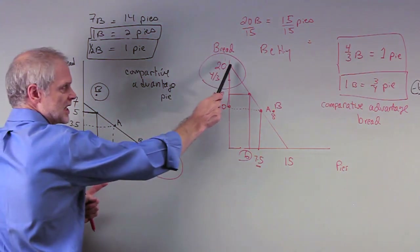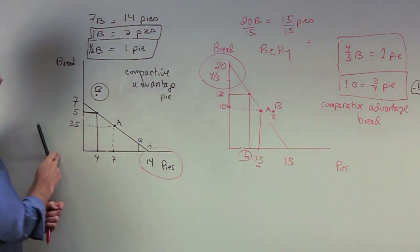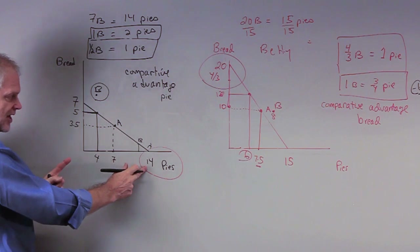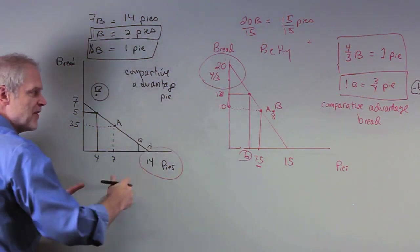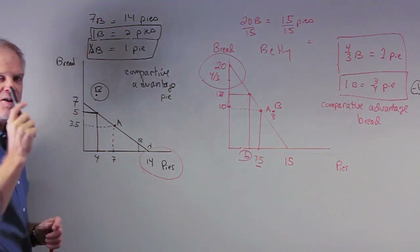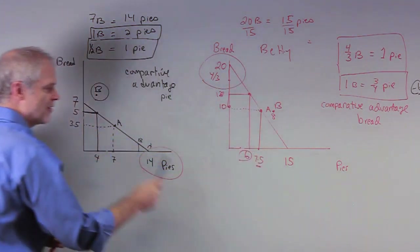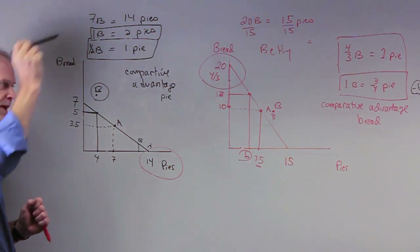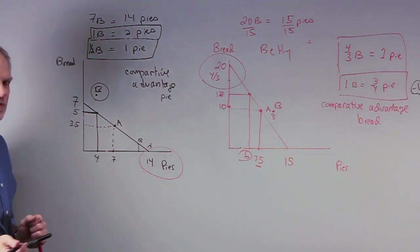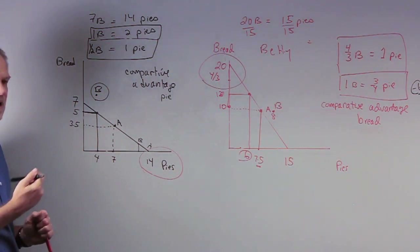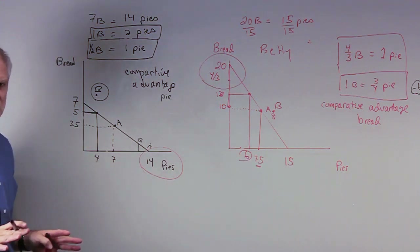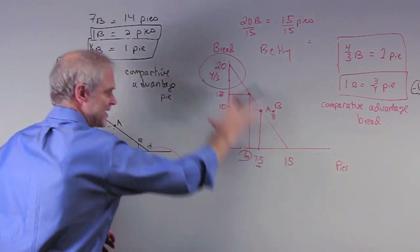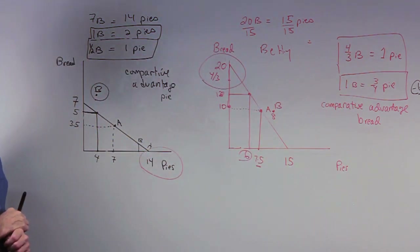Underline this: Betty is more productive in both bread and pies than Barney. And yet, because of comparative advantage — because Barney specialized where he had a lower opportunity cost, and she specialized where she had a lower opportunity cost — and then they trade, they both get to consume at a higher level than if they tried to produce everything themselves. Trade can help big countries and little countries. The United States can trade with Costa Rica and still benefit both, even though we're more productive in every good — trade is still advantageous for both countries despite differences in absolute advantage.